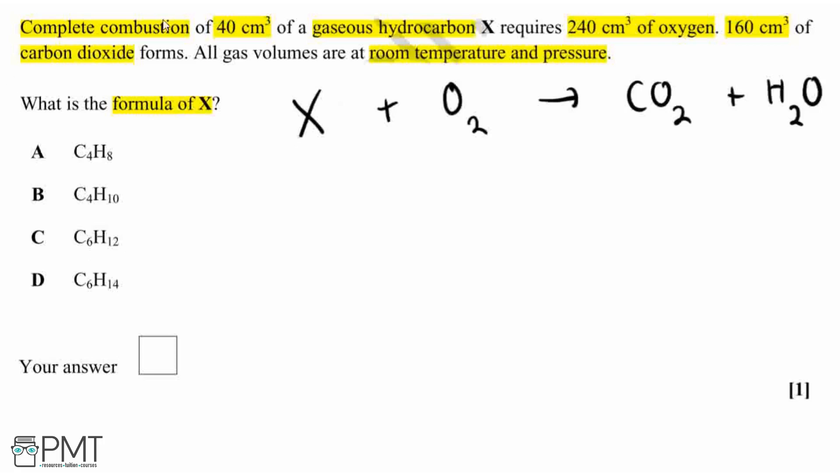So now let's start to look at some of these mole ratios to identify the ratios within the equation. We've been told that we've got 40cm³ of hydrocarbon X, and therefore the ratio of X to our carbon dioxide is 40 to 160, which goes down to a 1 to 4 ratio. Therefore, we've got 4 moles of carbon dioxide, and this means that as we've got 4 carbons from that carbon dioxide, our hydrocarbon X will also have to have 4 carbons.